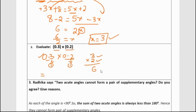We have to count the total decimal places: one decimal place from 0.3 and one from 0.2, giving two decimal places total. So we place the decimal point two places from the right in the result. Therefore, 0.3 into 0.2 equals 0.06.